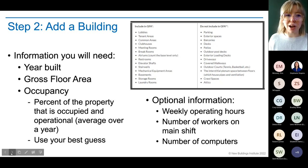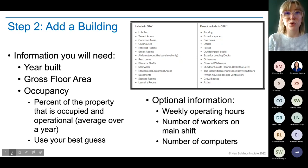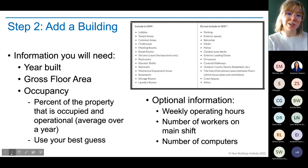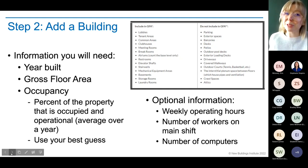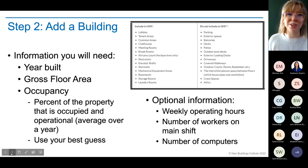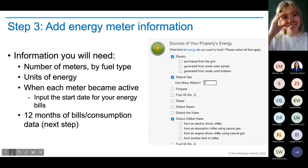Another question in this section is about occupancy — the percent of the property that is occupied and operational as an average over the year. Don't overthink it. The Portfolio Manager tooltip even says to just use your best guess. It's not going to play a huge factor in the metrics. More helpful is the optional information about weekly operating hours, number of workers on your main shift, and number of computers — though for cultural institutions that last one isn't required.